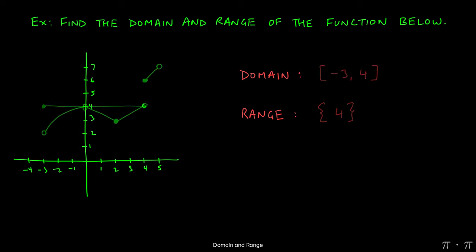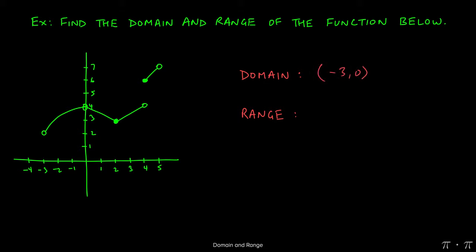Now let's look at this piecewise-defined function. There's an open circle at negative 3, then the function is continuous until we reach 0, where there's another open circle. It's continuous again from 0 until 2, which has a solid dot, so no problem there. At 4 there's a gap with an open circle, then the graph jumps to a closed circle and continues. For the domain we look at this in pieces: the first piece is from negative 3 to 0, not including either endpoint since both have open circles.